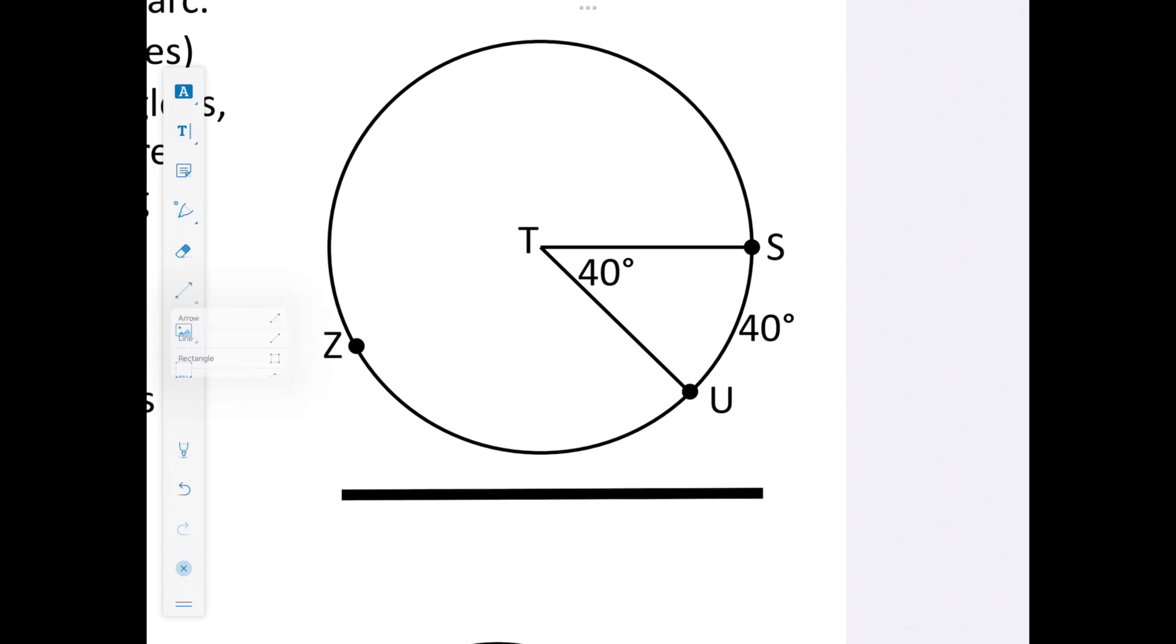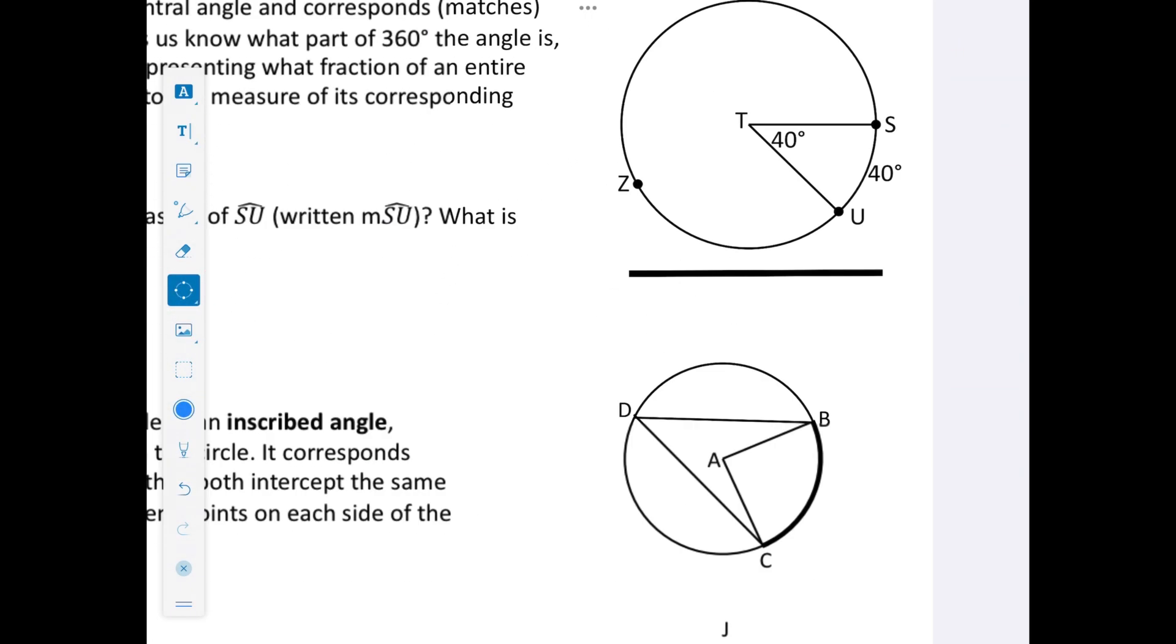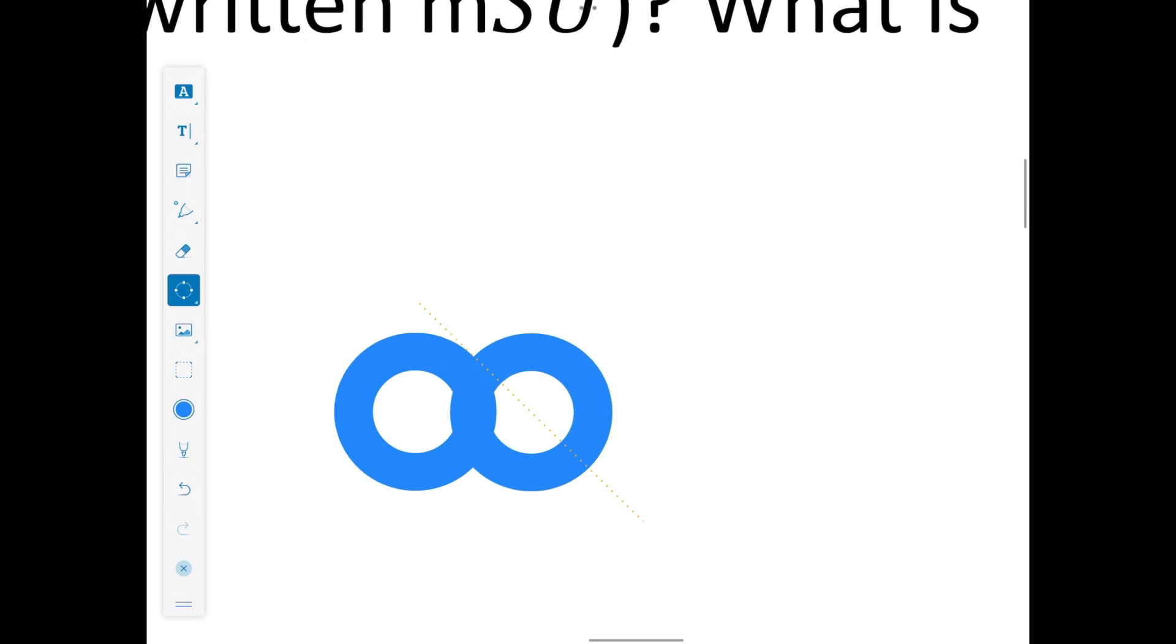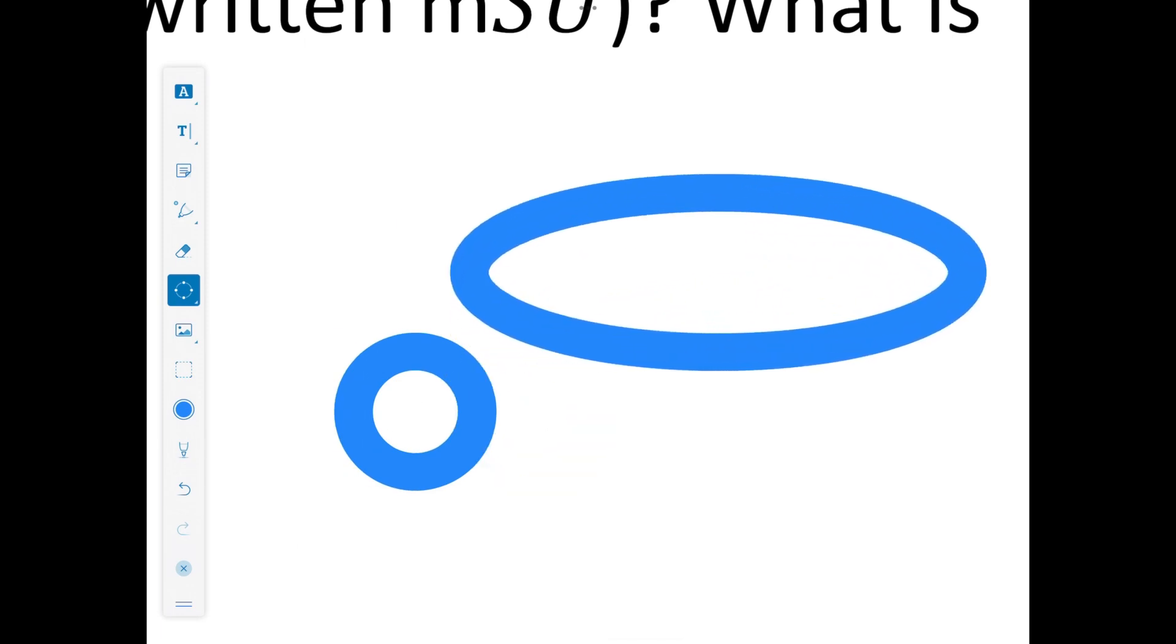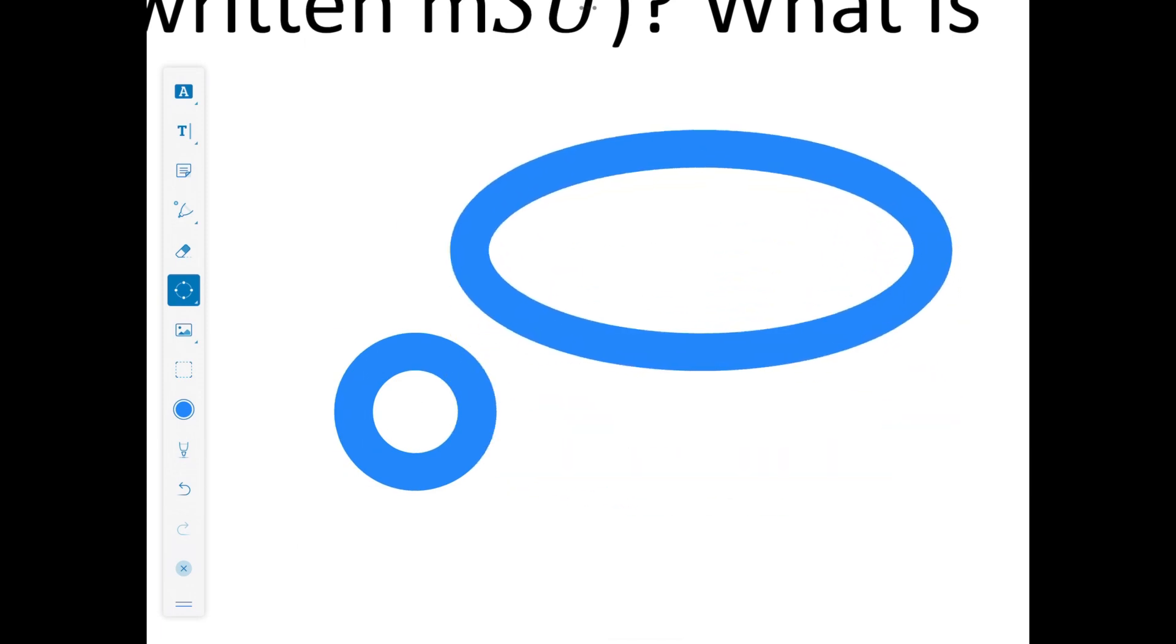I can also add lines, there's rectangles, there's ellipse, there's polygons. So there's a lot of different options that you have to create different shapes. This isn't something that I use as much in geometry. I think if I was teaching algebra, I would use some of this a little bit more.